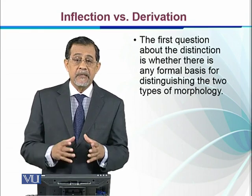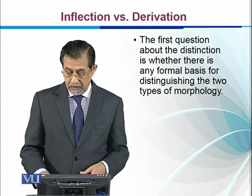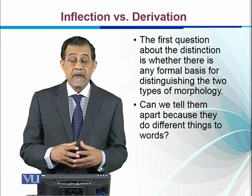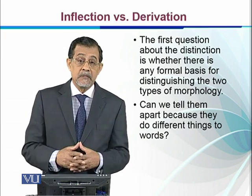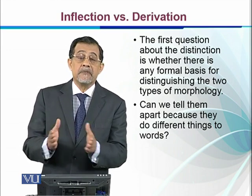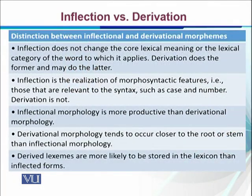Can we tell inflectional and derivational morphology apart because they do different things in words? We have seen that they have different roles in language, so let's look at some of the distinctive features between inflectional and derivational morphologies.